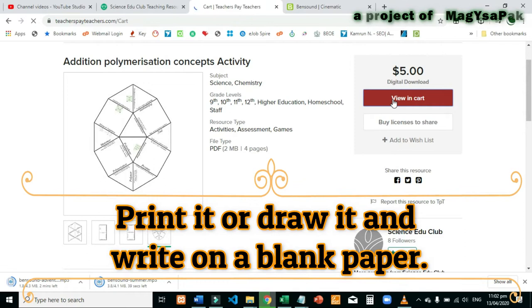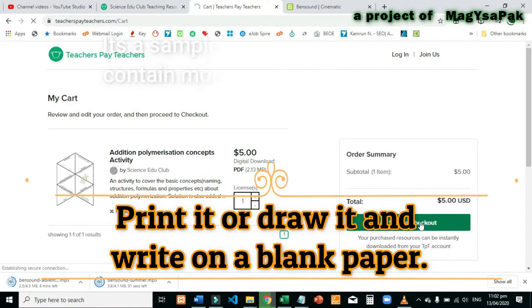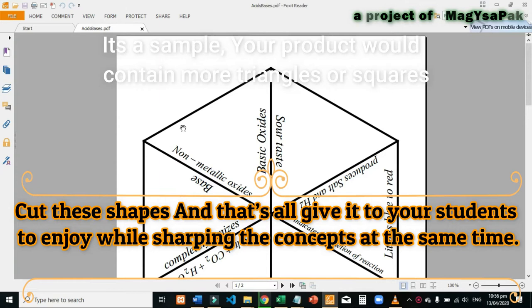Print this activity or if you are unable to get it printed, then just draw the shapes on blank paper and write on it. Cut these shapes with scissors and that's all.